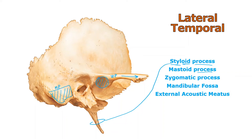The external acoustic meatus — we've seen this before — it's simply the ear hole on the outside, which is why it's called external. Sometimes it's called the external auditory meatus. Either way, the abbreviation is E-A-M. A meatus is a tunnel — anytime you see that word, think tunnel. Plural is meati, though 'meatuses' is common in American textbooks.